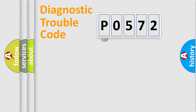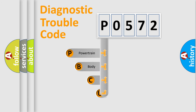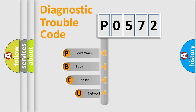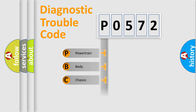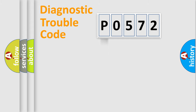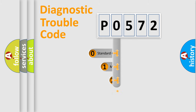First, let's look at the history of diagnostic fault code composition according to the OBD2 protocol, which is unified for all automakers since 2000. We divide the electric system of the automobile into four basic units: Powertrain, Body, Chassis, and Network. This distribution is defined in the first character of the code.